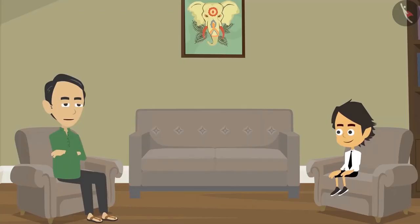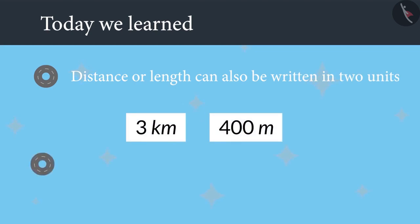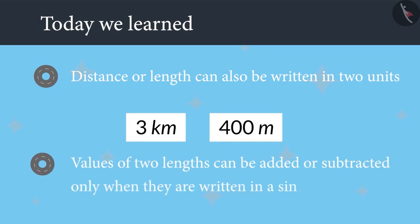Well done, Ayushman. Today you learnt that distance or length can also be written in 2 units. Example, 3 kilometres, 400 metres. Values of 2 lengths can be added or subtracted only when they are written in a single unit.